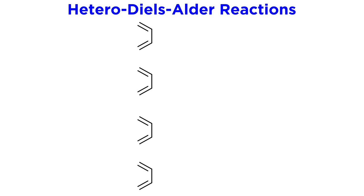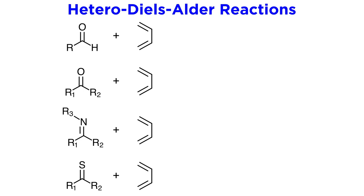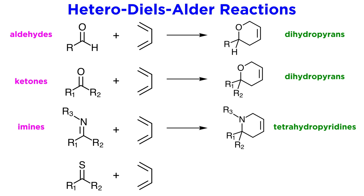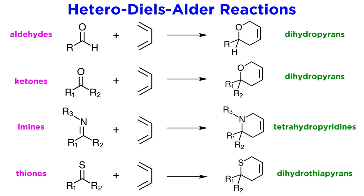Let's see some examples of 1,3-butadiene reacting with various dienophiles and the heterocycles they produce. If using aldehydes or ketones, we can produce dihydropyrans. If using imines, we can produce tetrahydropyridines. If using thiones, the sulfurous analogues of ketones, we can produce dihydrothiopyrans. So as we can see, the utility of Diels-Alder chemistry goes far beyond the generation of cyclohexenes alone.